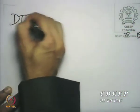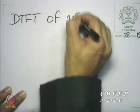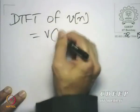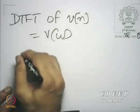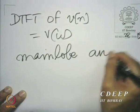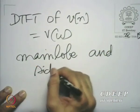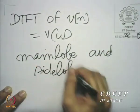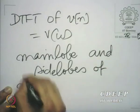We saw for the case of the rectangular window, and we now make the statement that this is true for most windows: in the DTFT of the window, DTFT of v(n) which we will call V(ω), there is typically a main lobe and several side lobes of decreasing amplitude.